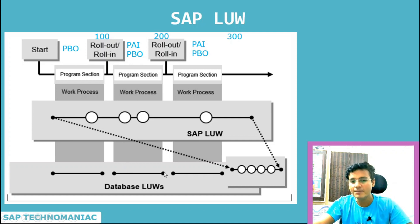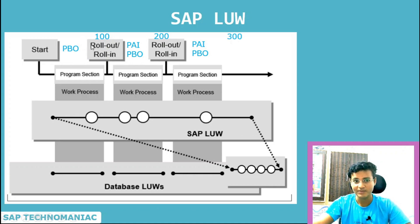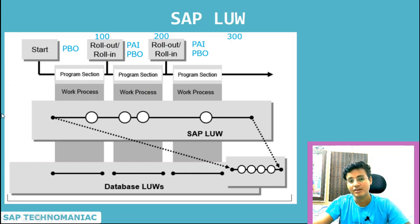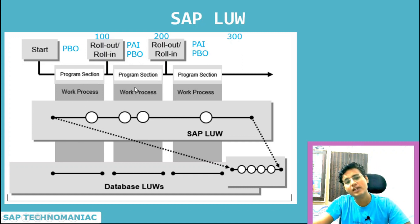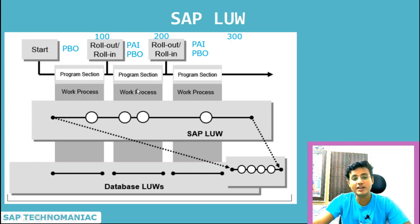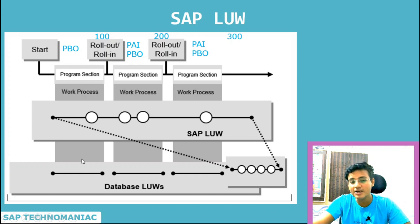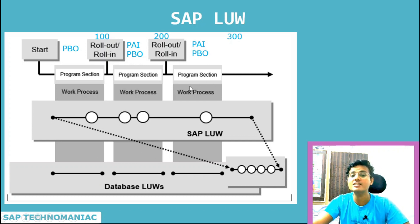Again, for the second screen, the same implicit database commit will happen. But in real time, if I am creating a sales order and entering header data in one screen and line item data in another screen, I don't want to commit the header data alone to the database. I want to save all the data together. And if something goes wrong, I don't want to save the sales order at all. But if I work with database LUW, this is not possible because each time an implicit database commit is happening. I can't save half data in one LUW and half in another. That is the reason the SAP LUW concept comes in.